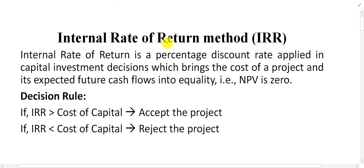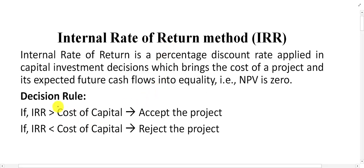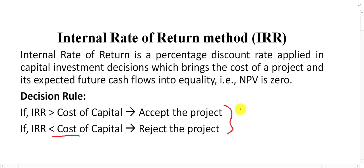IRR shows profitability by considering the time value of money. If the IRR of a project is 10%, it means the profitability is 10%; if the IRR is 15%, the profitability is 15%. The decision rule: if IRR is greater than cost of capital, the project should be accepted; if IRR is less than cost of capital, the project should be rejected. Cost of capital means the interest rate, hurdle rate, cutoff rate, or discount rate.